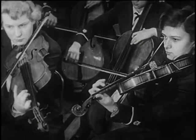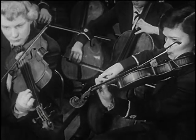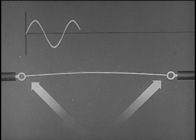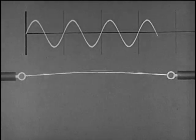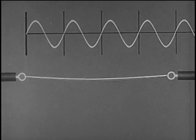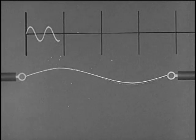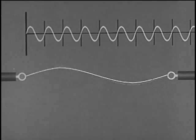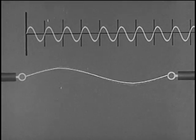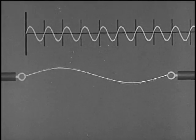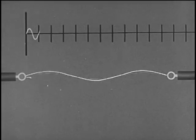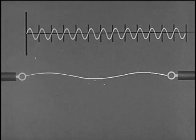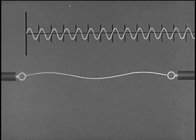Each vibrating string may be made to produce different tones. To explain some of the reasons for this, let us observe this string. There is no motion at these endpoints or nodes. The string vibrates along its full length and produces its longest possible wavelength. This is the lowest or fundamental frequency of the string, sometimes called the first partial. If the string vibrates in two segments, it produces a wavelength that's one-half that of the fundamental — the first overtone, or second partial. Since wavelength is inversely proportional to frequency, the frequency of the first overtone is twice that of the fundamental. When the string vibrates in three segments, it produces its second overtone, the third partial, at a frequency three times that of the fundamental.